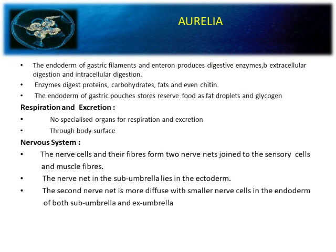The nervous system: nerve cells and their fibers form two nerve nets joined to sensory and muscle fibers. The first nerve net lies in the sub-umbrella in the ectoderm. The second nerve net is more diffused, with smaller nerve cells in the endoderm of both sub-umbrella and ex-umbrella.